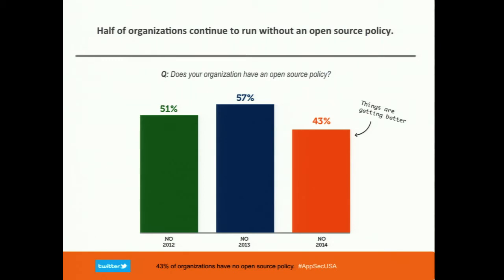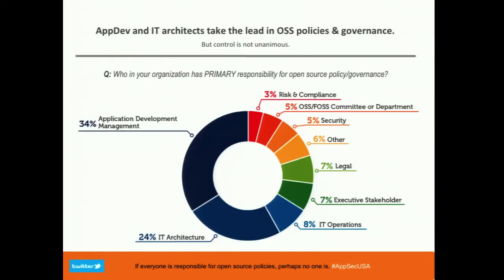For organizations over 100 developers, 77% have an open source policy in place — bigger organizations are typically more mature. But in large organizations, you'll find policies that are so far disconnected from the people actually doing the work that they're either rarely relevant or unknown to practitioners. In my experience, smaller organizations are often better at this — they have end-to-end visibility. In big organizations you get worsening silo effects: decision-making is taken away from the people with hands on keyboard and all the context.